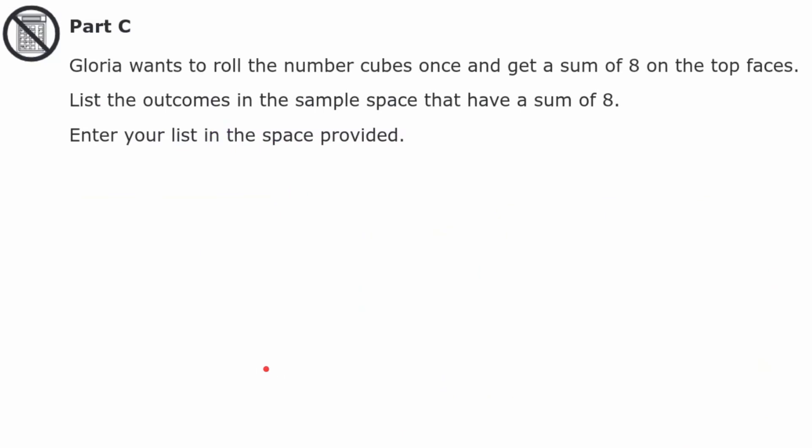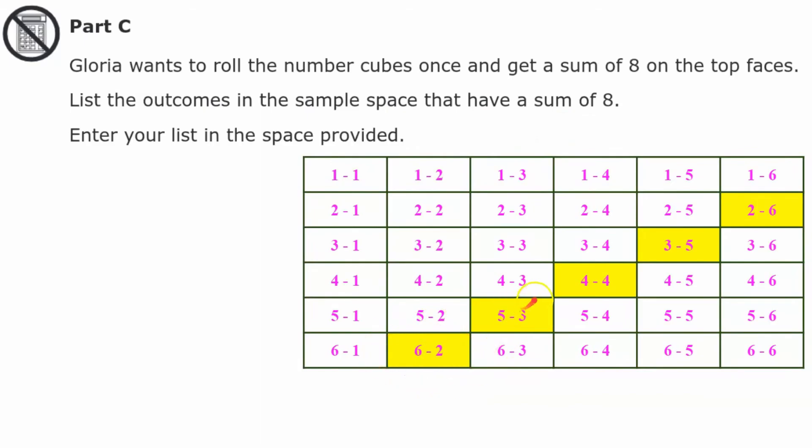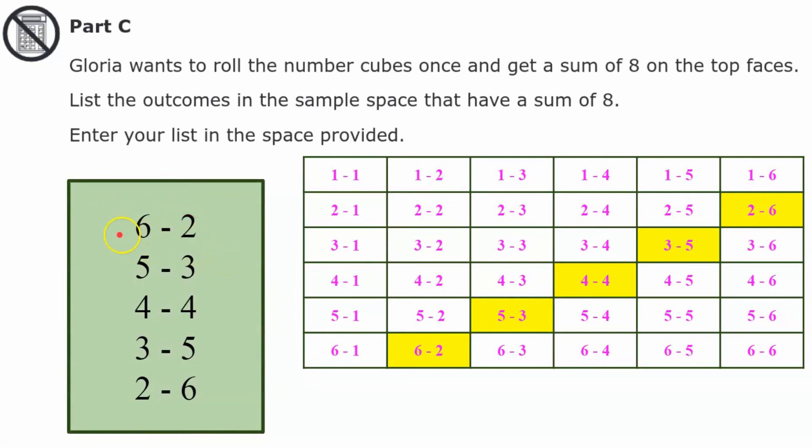Part C, Gloria wants to roll the number cubes once and get a sum of 8 on the top faces. List the outcomes in the sample space that have a sum of 8. Please pause now and come back when you're ready. Welcome back. So here's our sample space and in my sample space I've highlighted all the sums of 8. You can see the way I've organized my table that this diagonal represents all the sums of 8. So I'm just going to do what I was asked to make a list. You could get 6 and 2, 5 and 3, 4 and 4, 3 and 5, and 2 and 6. Remembering that 6 and 2 and 2 and 6 are two different rolls because this is number cube 1 with a 6 and number cube 1 with a 2. So think of it when you're rolling two number cubes that even though sometimes they're both white, maybe you have two different colors and then you can identify how they would be different.